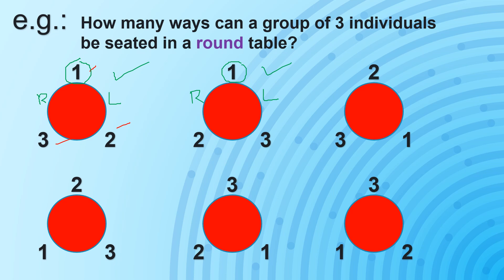Let us go on to the third one. Again, let us use 1 as our point of reference. On the right side of 1 is the number 2, while on the left side of 1 is the number 3, which is the same as our second arrangement. So therefore, this is not a unique arrangement, because this is the same as that one.